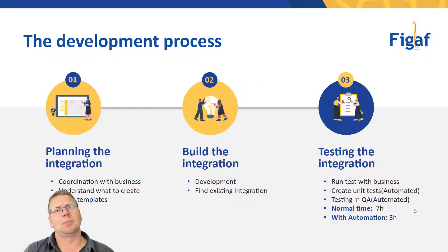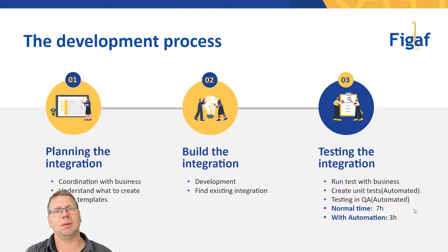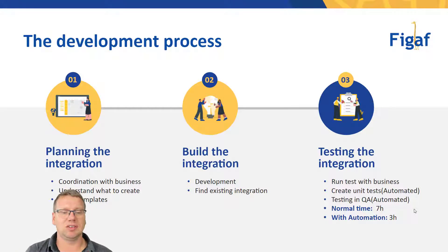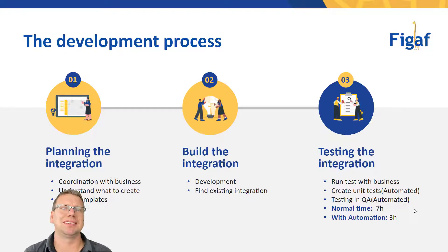If we look at the development process, what kind of steps are involved and how can automation help here? First off, whenever you're developing or changing any interface, you'll be using this process. First is to plan the integration — this is coordination with the business. Understand what they want you to develop, and figure out if you actually have any templates that correspond to this.